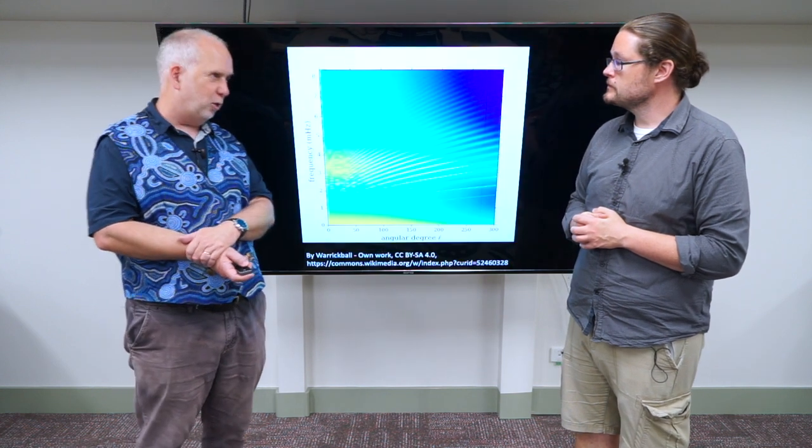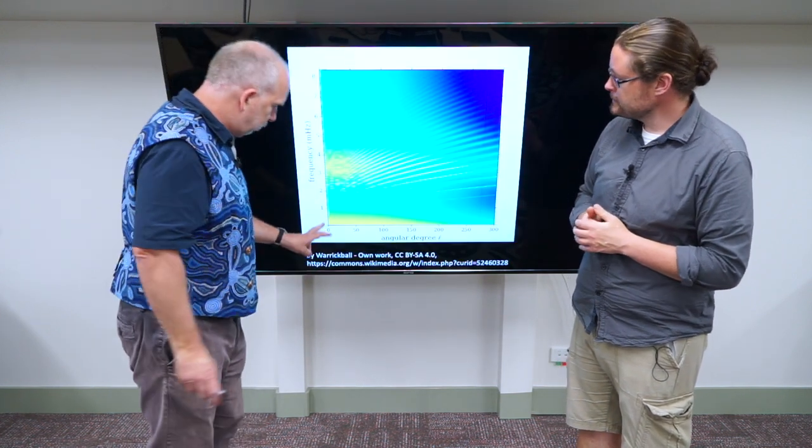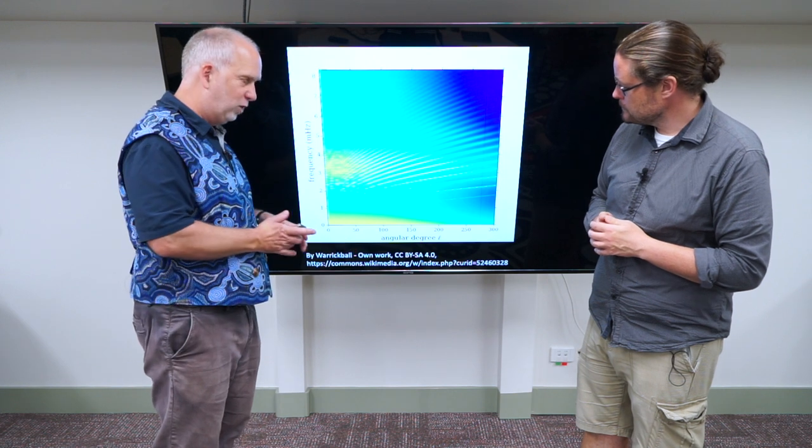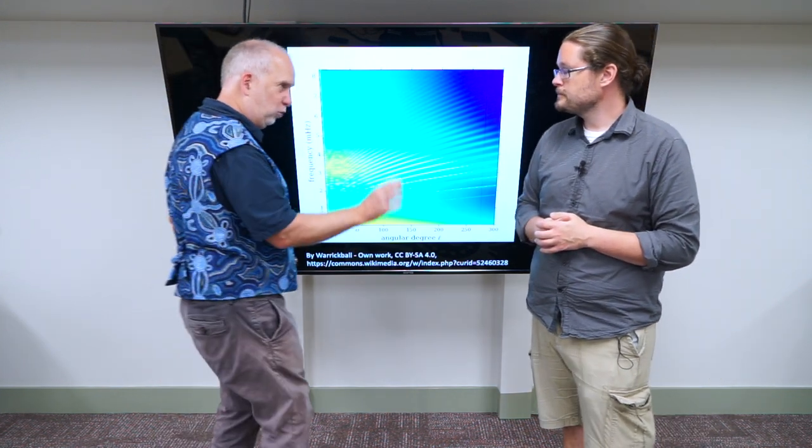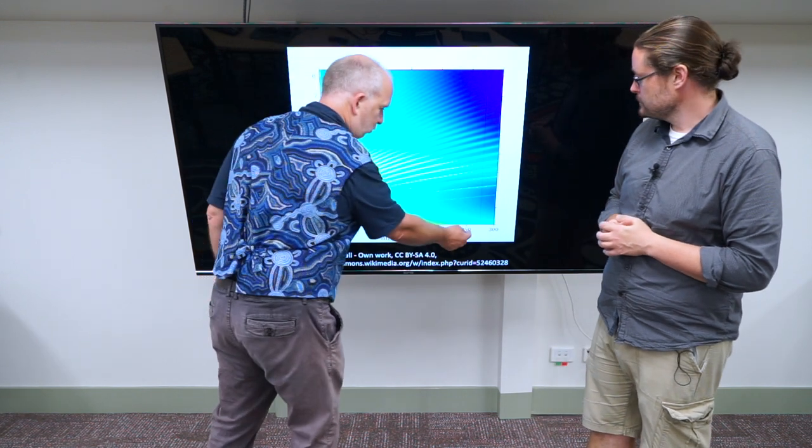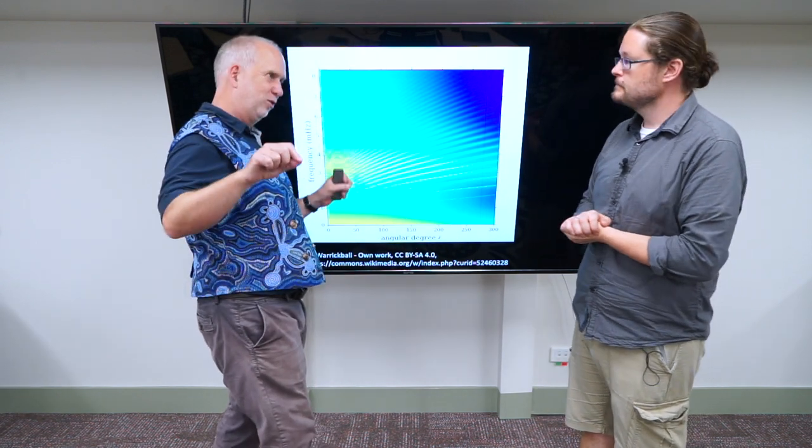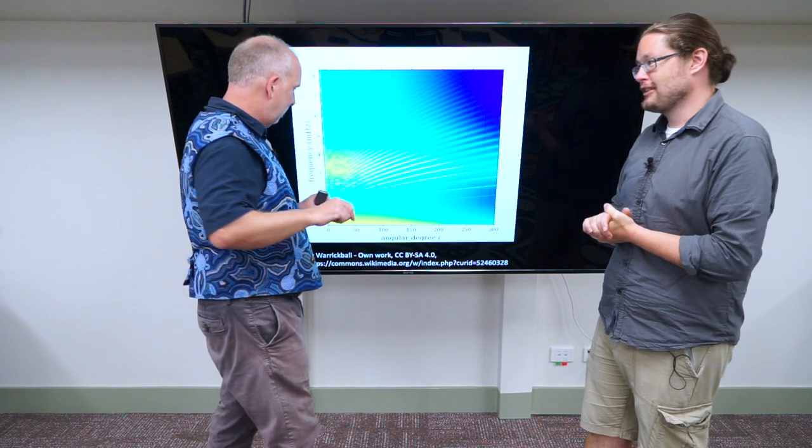So that's the sound, but a more interesting way to plot it is graphically. What we plot here is angular degree. This is how small the components are. A high angular degree is components—like a degree of 250, you mean there are 250 waves across the surface of the Sun. Yeah, which is a lot.